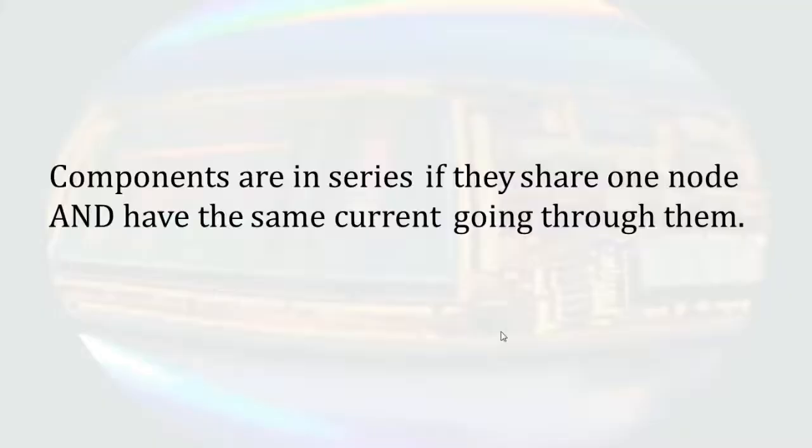Let's start with series connections. A series connection occurs when two-terminal components are connected so that they share a node and they have the same exact current going through them. I do not mean they have the same amount of current, but I mean the actual electrons pass from one component to the next. We might write the definition as: components are in series if they share one node and have the same current going through them.